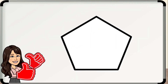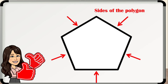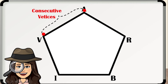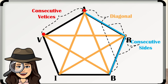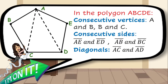Now, let's talk about the vertices and sides of a polygon. In the figure, those which are marked with a red arrow are the sides of the polygon, while those which are marked with a yellow dot are the vertices. Consecutive vertices are vertices on the same side of the polygon. Consecutive sides are sides that have a common vertex. A diagonal is a segment joining non-consecutive vertices. In the polygon ABCDE, consecutive vertices are A and B, and B and C. Consecutive sides are segment AE and segment ED, and segment AB and segment BC. Diagonals are segment AC and segment AD. If you think there are more than what we stated, just comment down below your answers.